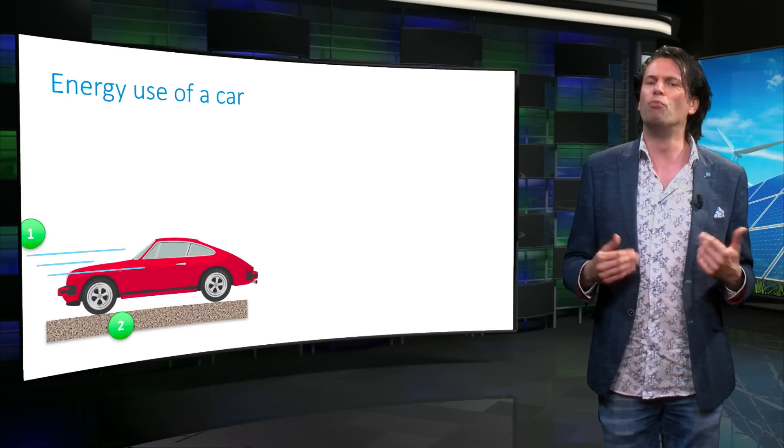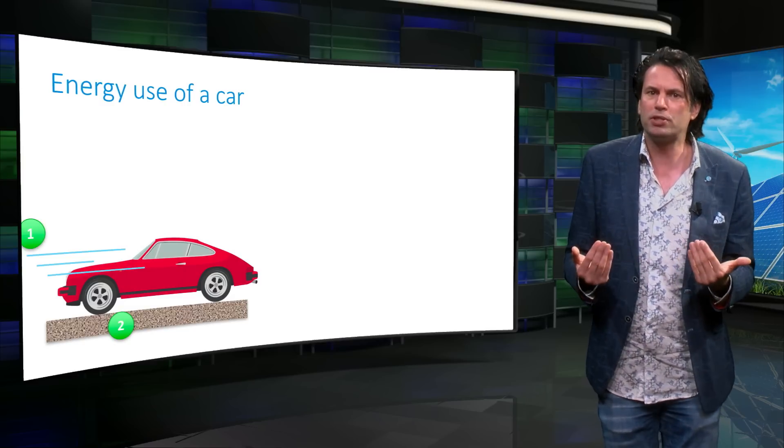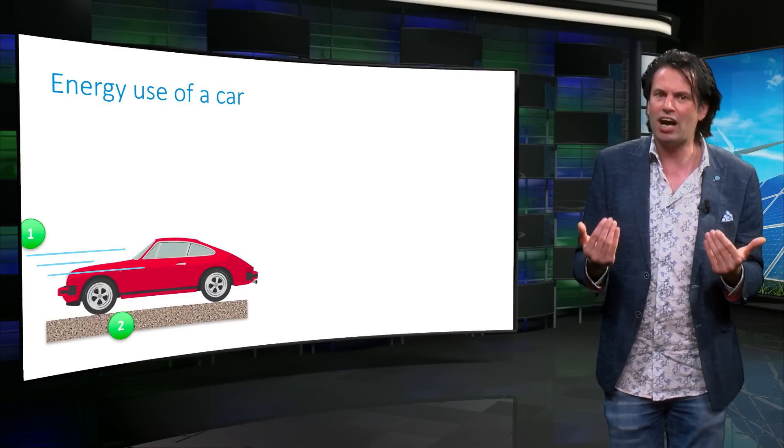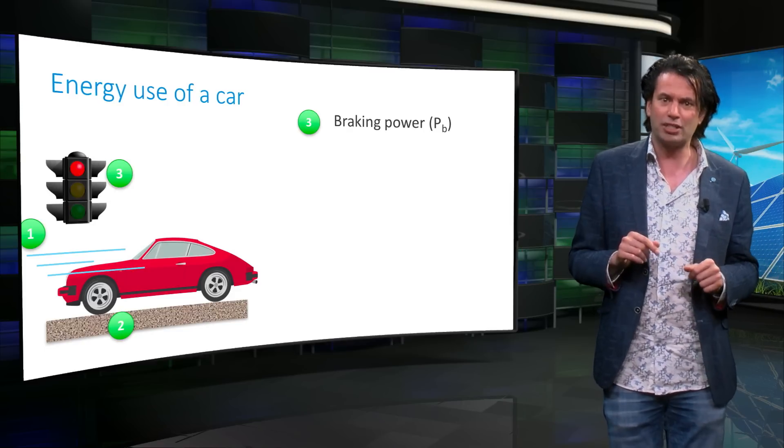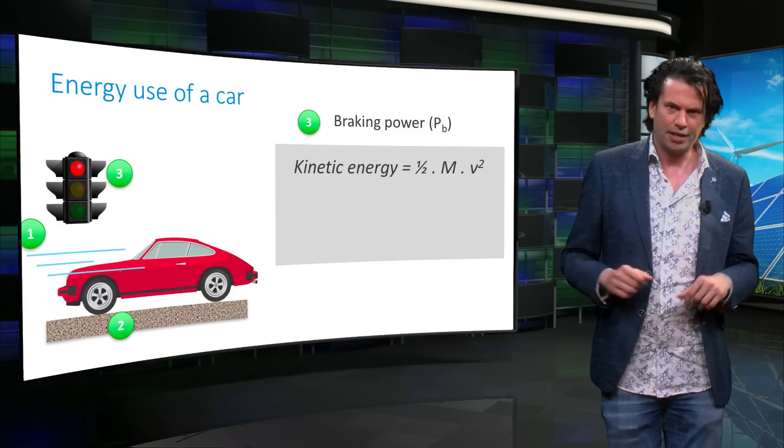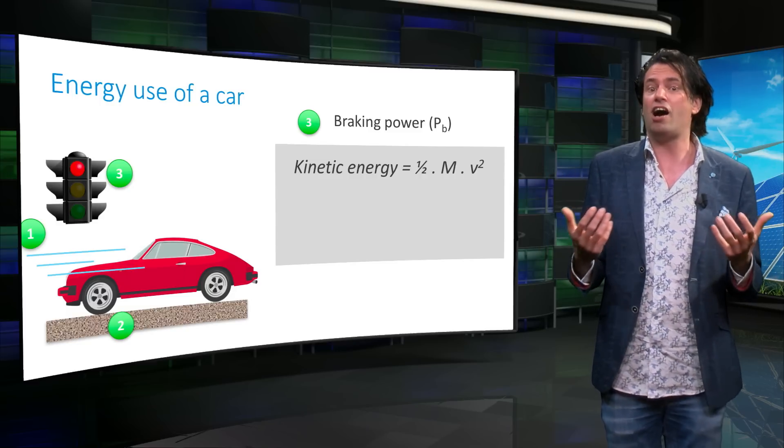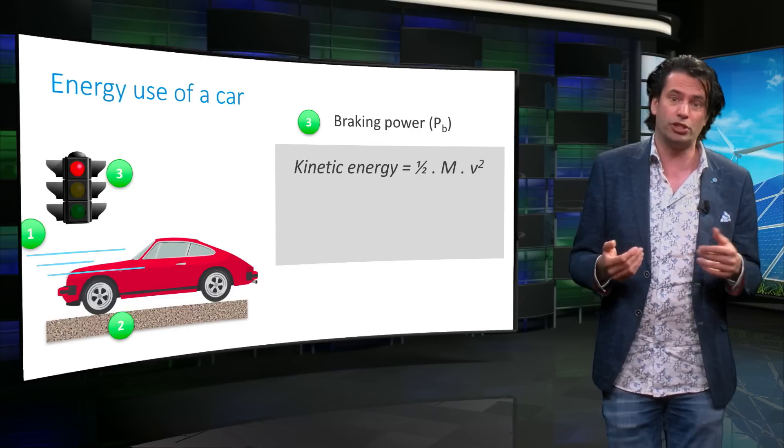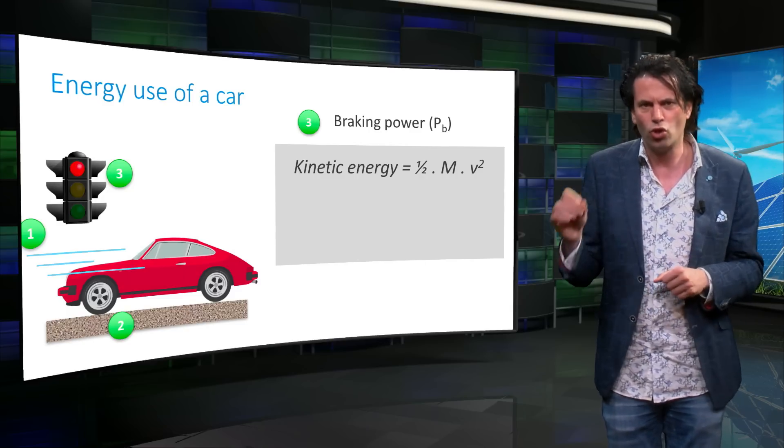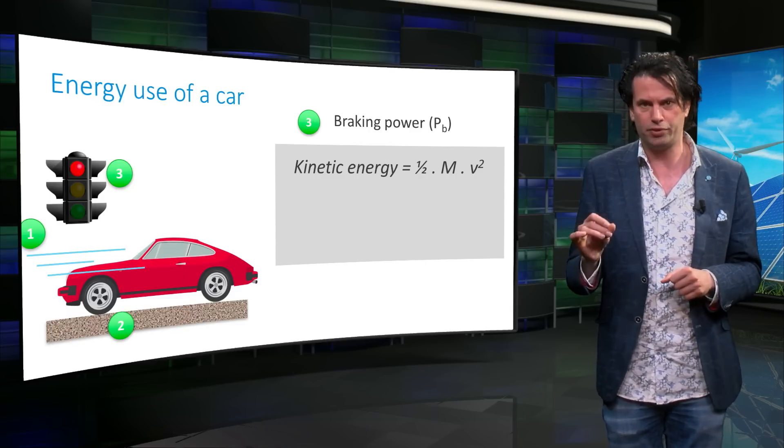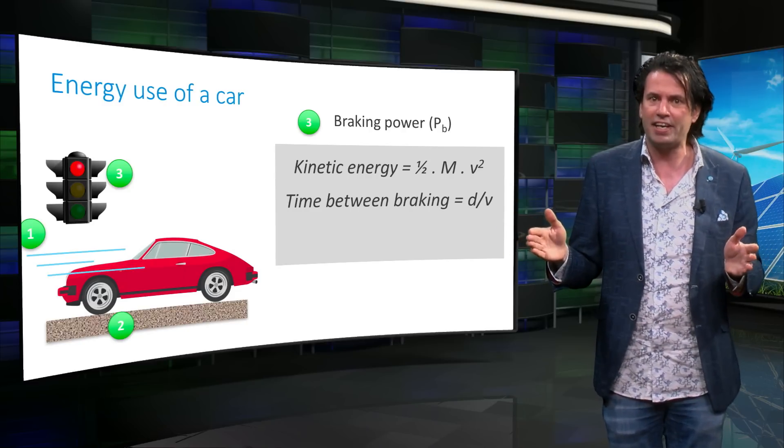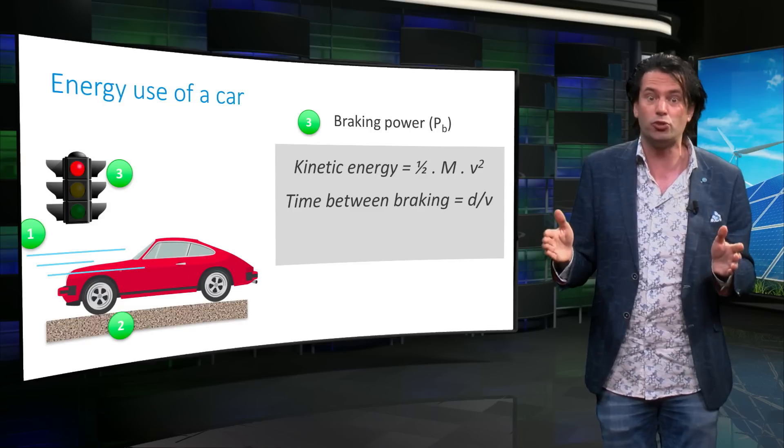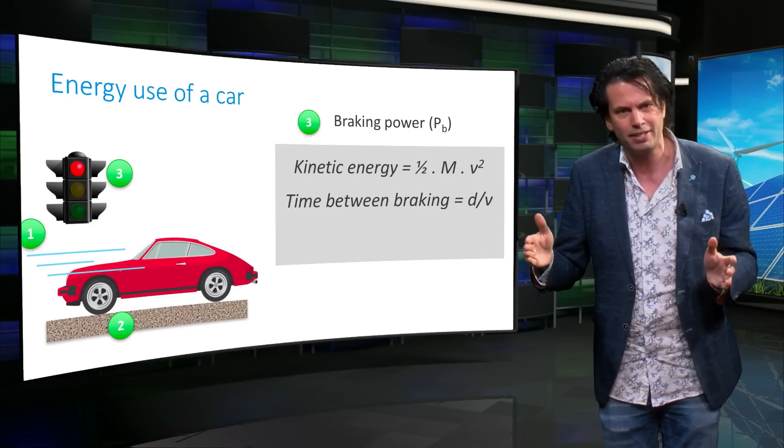The kinetic energy of a moving car is absorbed by the brakes when they are used to bring the car to a halt. This is known as braking power, or Pb. The kinetic energy is expressed as half times the mass times the velocity squared. This is lost when the car comes to a halt. The time between two braking events can be defined as the distance travelled between the two braking events divided by the velocity.